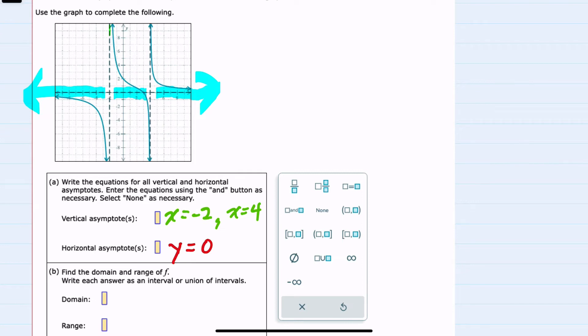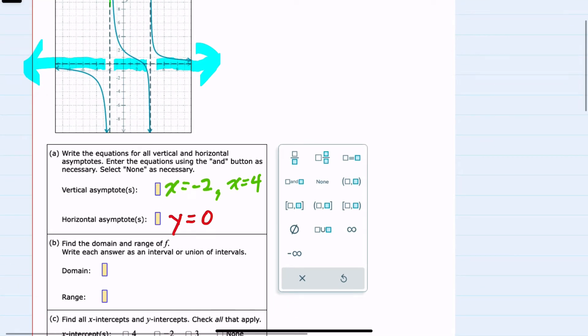So to write this in interval notation I would say that it starts at negative infinity, of course we wouldn't include infinity, and it goes to the x value of negative 2 not inclusive. And then we have a union with everything between negative 2 and 4 also not inclusive, and then a union again with everything to the right of 4. So 4 to positive infinity. Our domain is essentially everything except for those values negative 2 and 4.